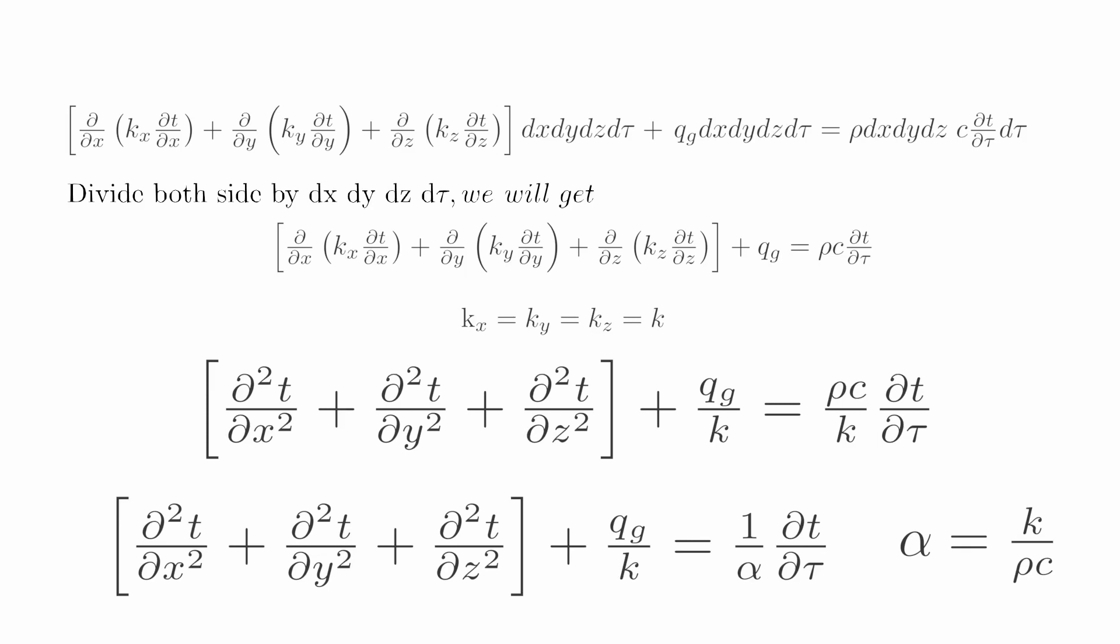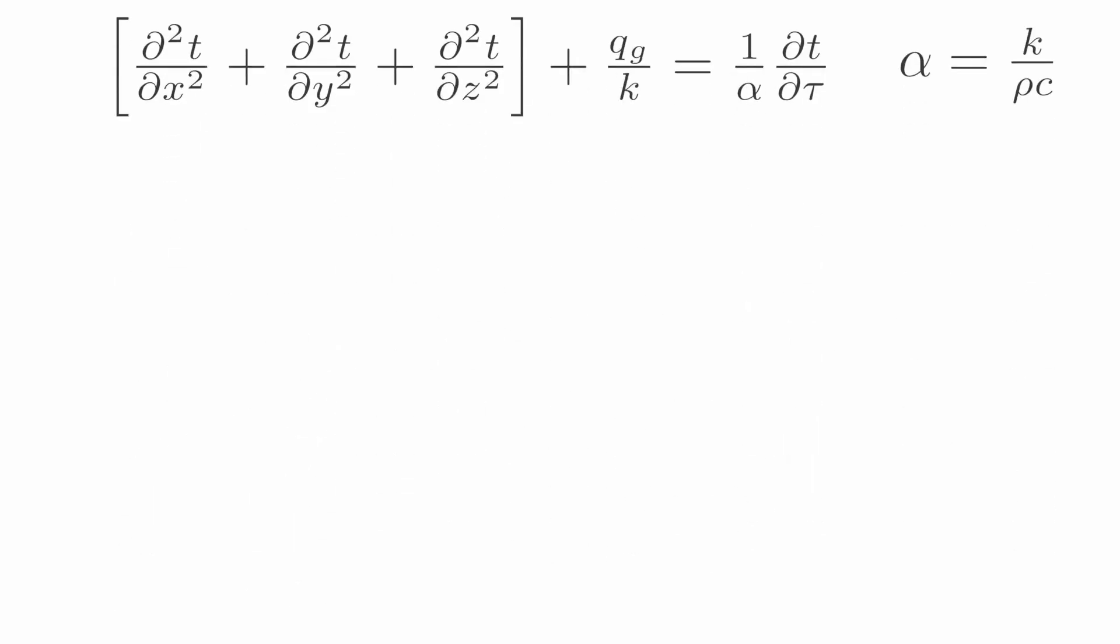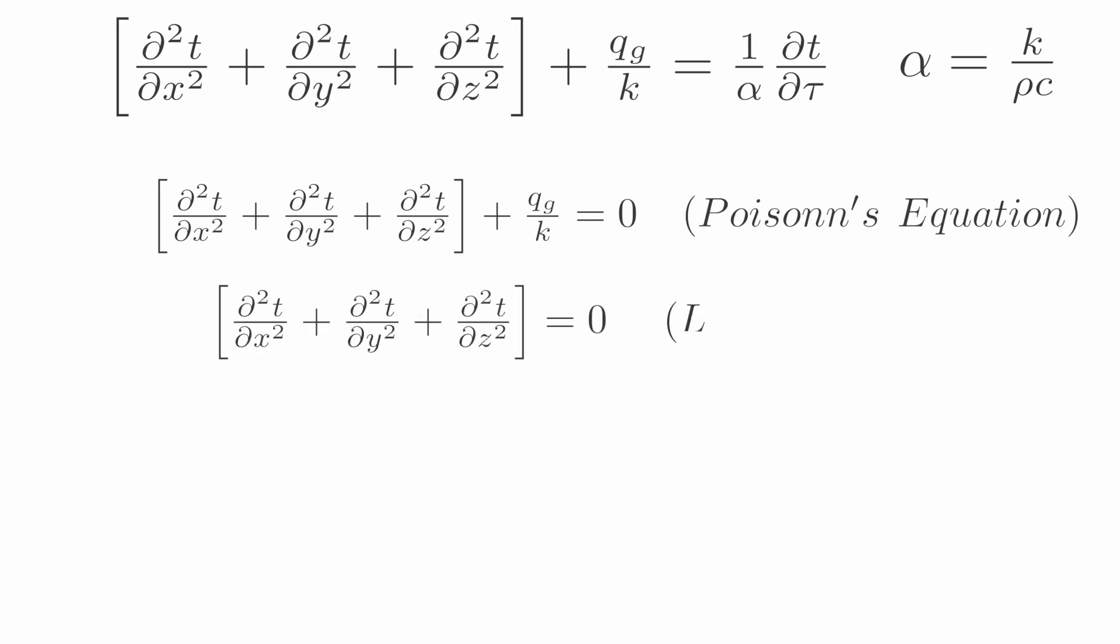Let's see some particular cases of this equation. First, if there is no dependence on time, heat conduction is steady, so ∂T/∂τ = 0. This equation is called Poisson's equation. Second case: if there is no internal heat generation and steady state heat conduction, the equation we get is called Laplace equation.